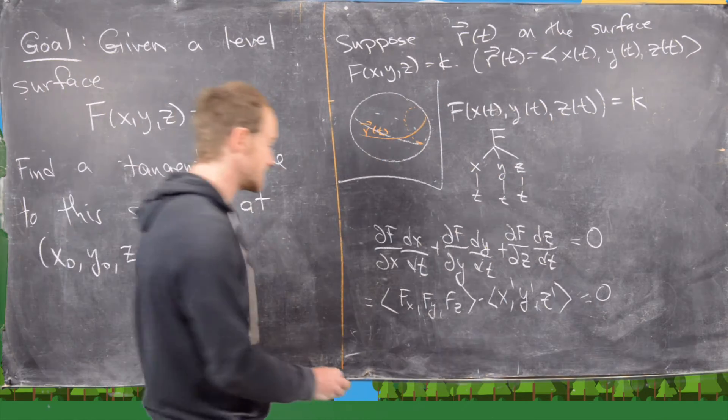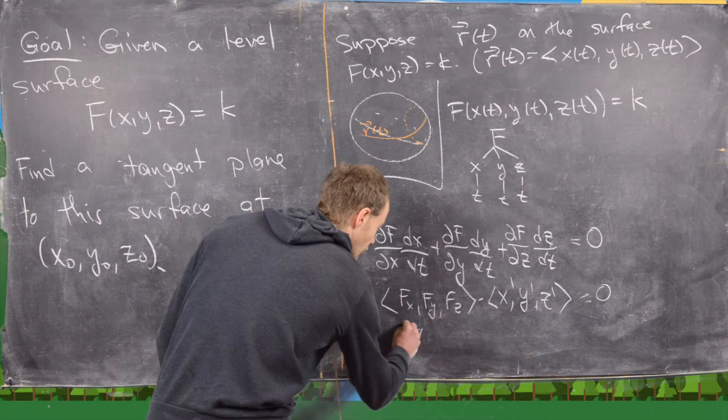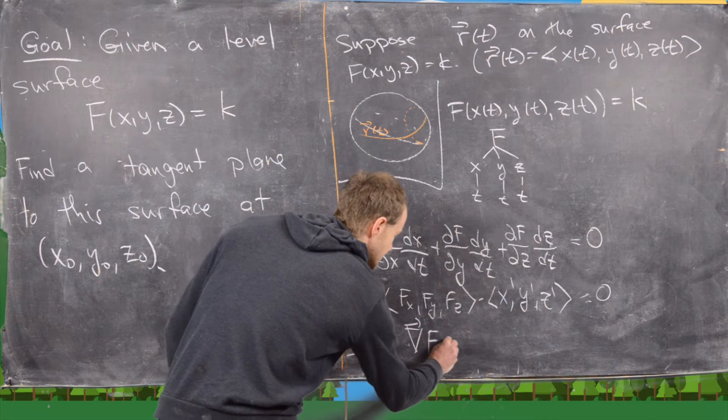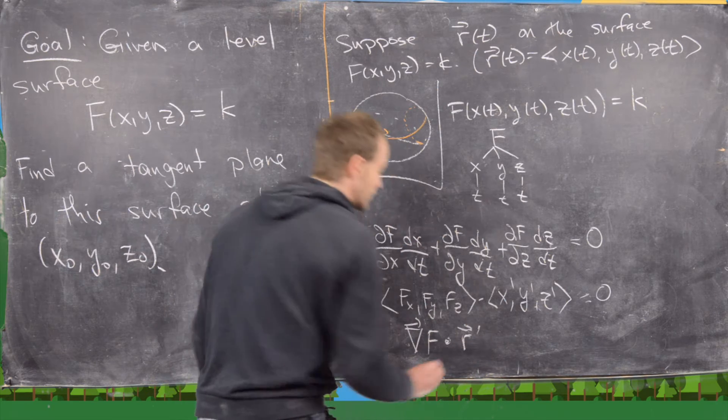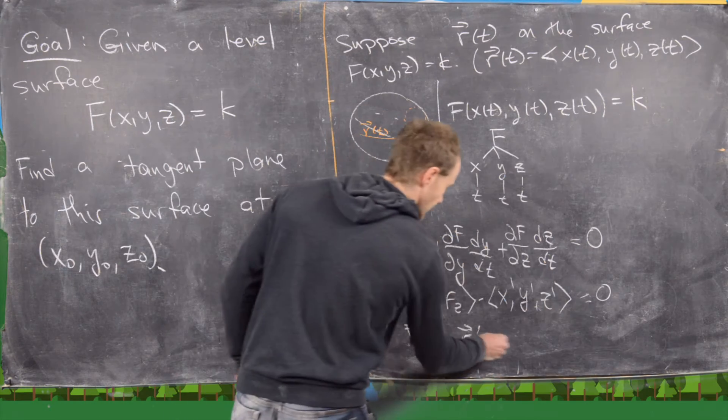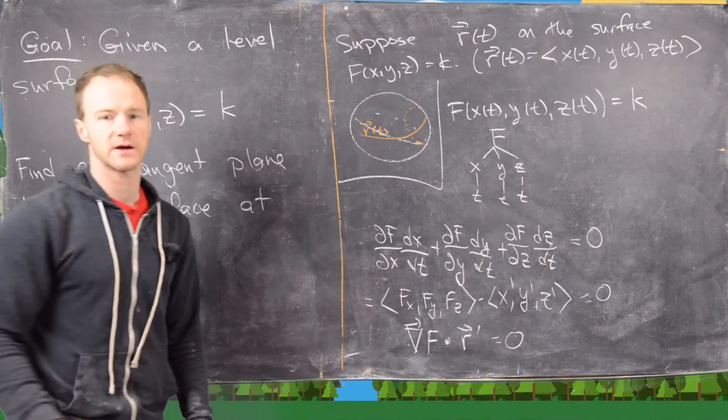But now notice that this is exactly equal to the gradient of f dotted with the derivative of r equals zero.